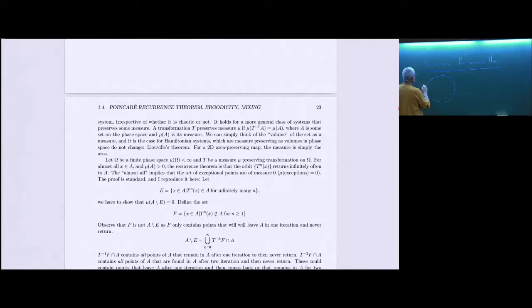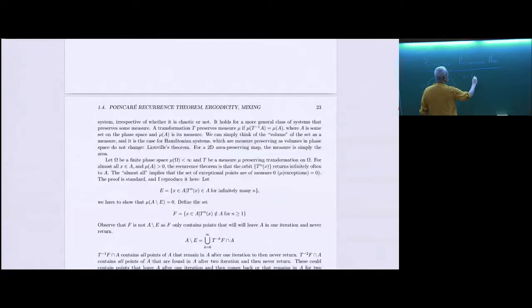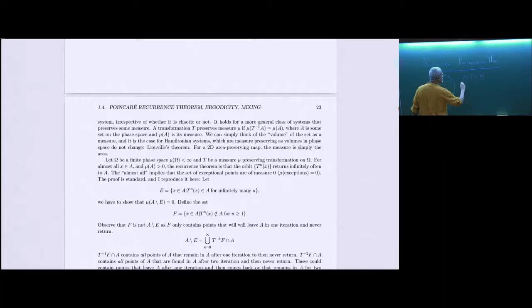Remember that we have a Hamiltonian flow on a phase space Omega, and this induces a transformation. If you integrate the equations of motion, it takes every phase space point — let me just collectively call that X, the collection of all positions and all momenta, a 2D-dimensional vector — to some other point. Let us keep that as a finite transformation and call it T.